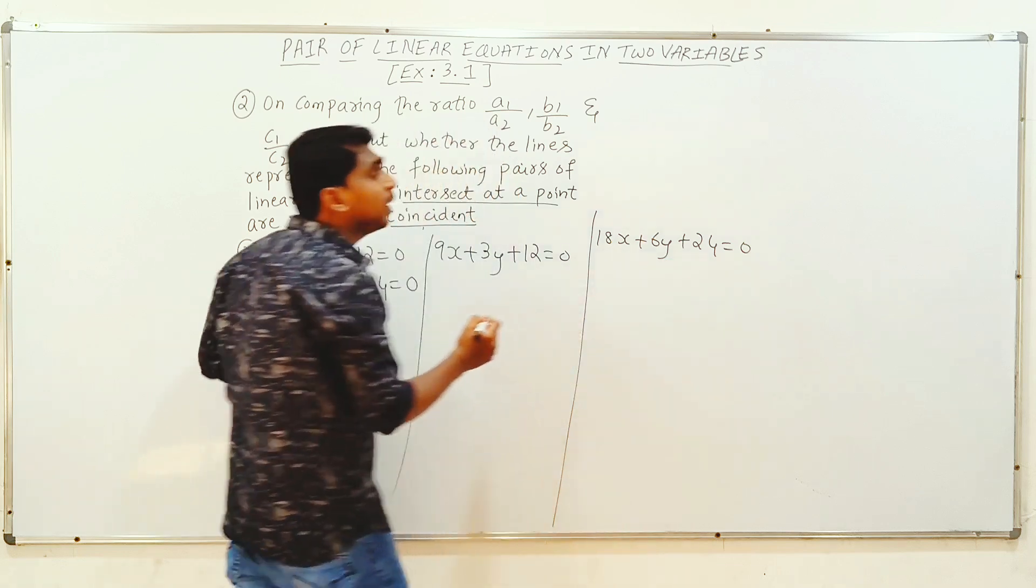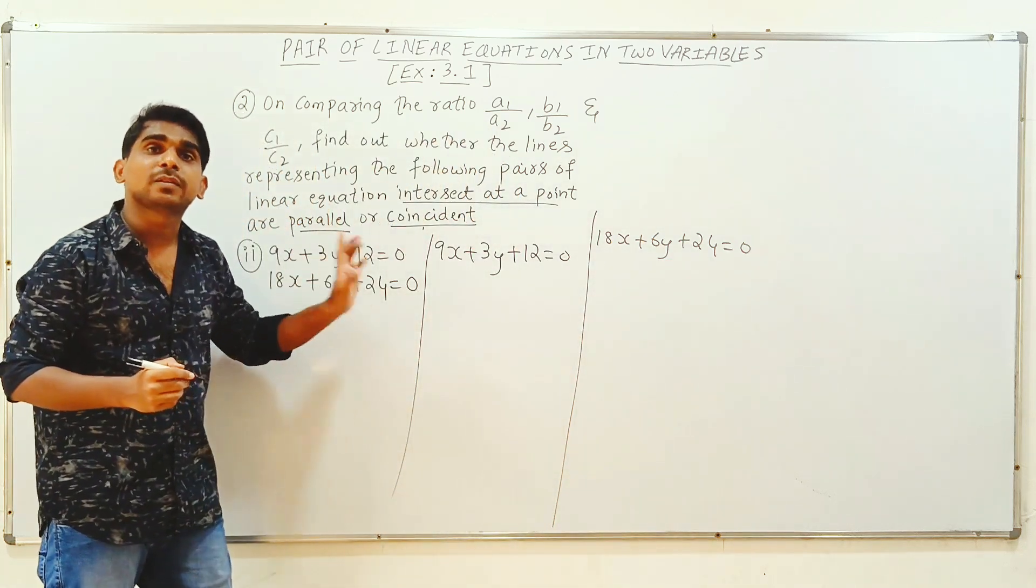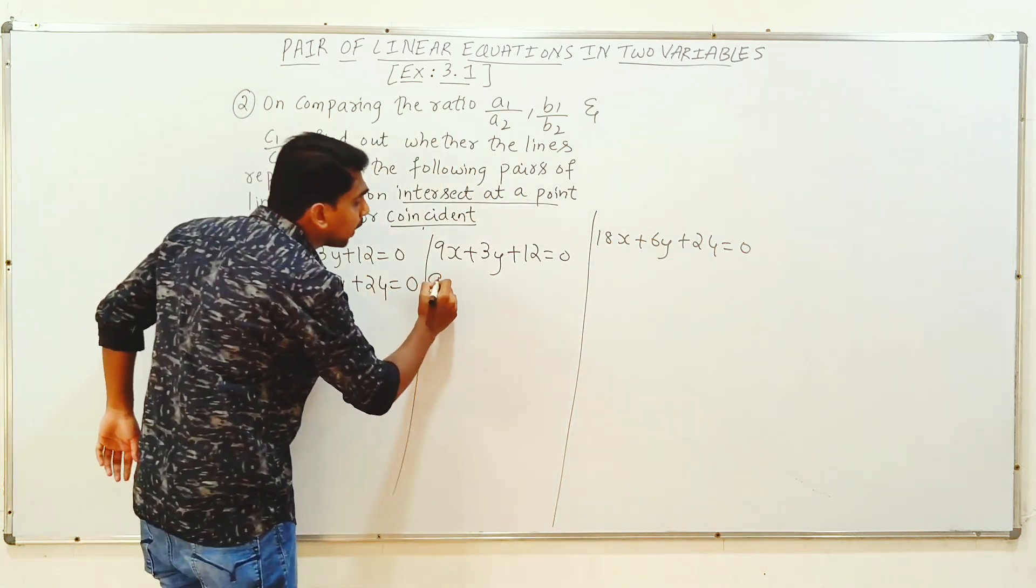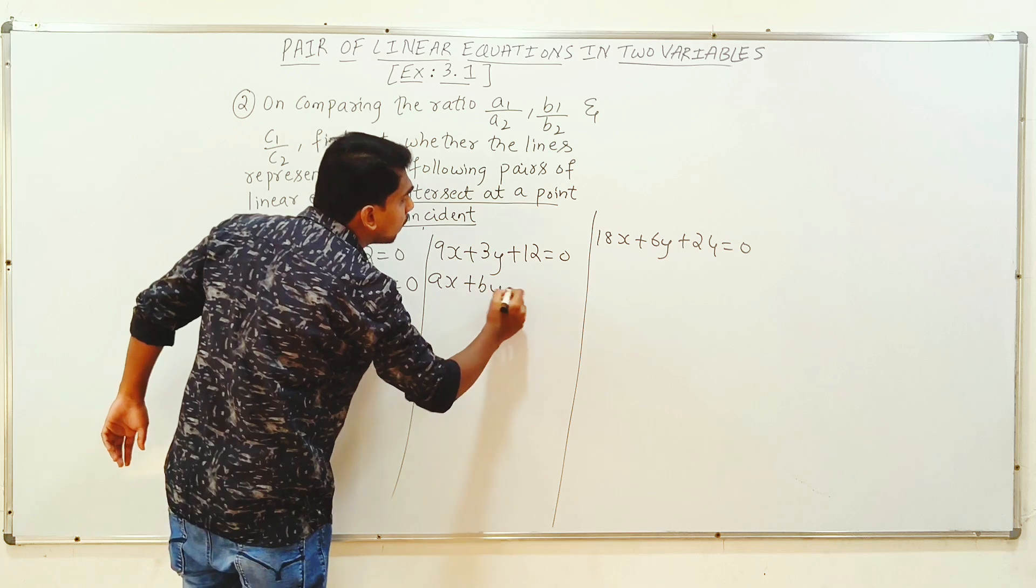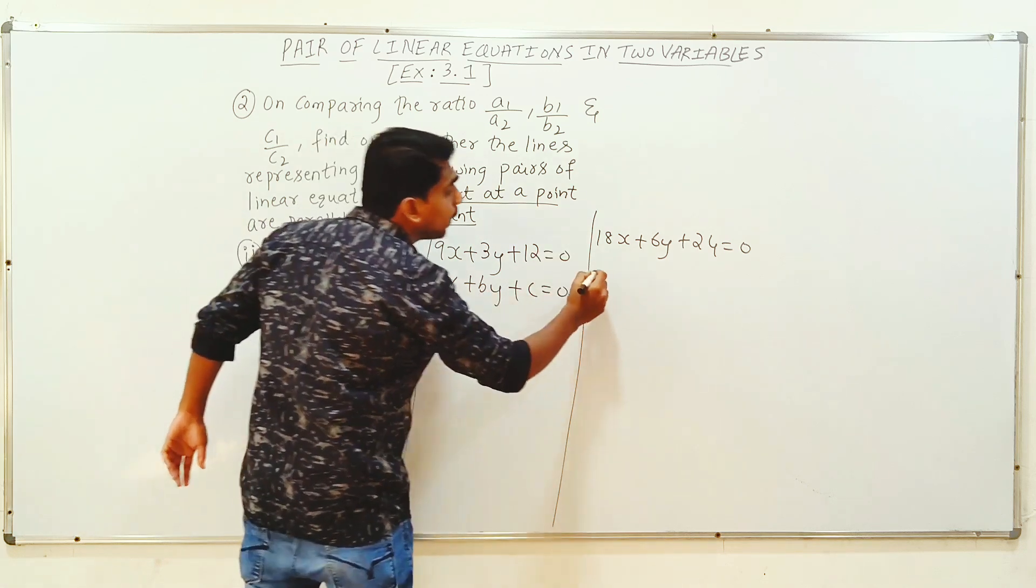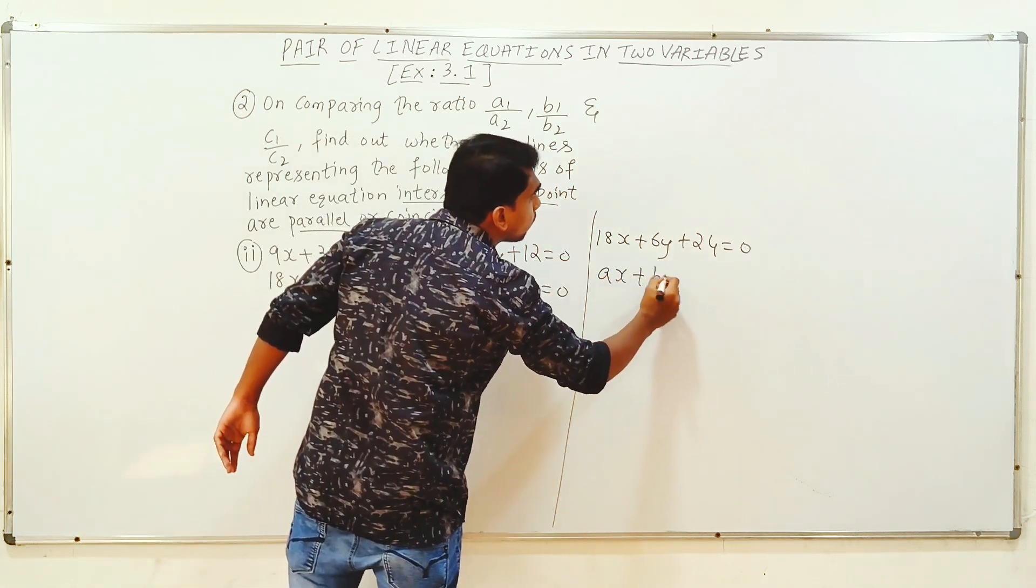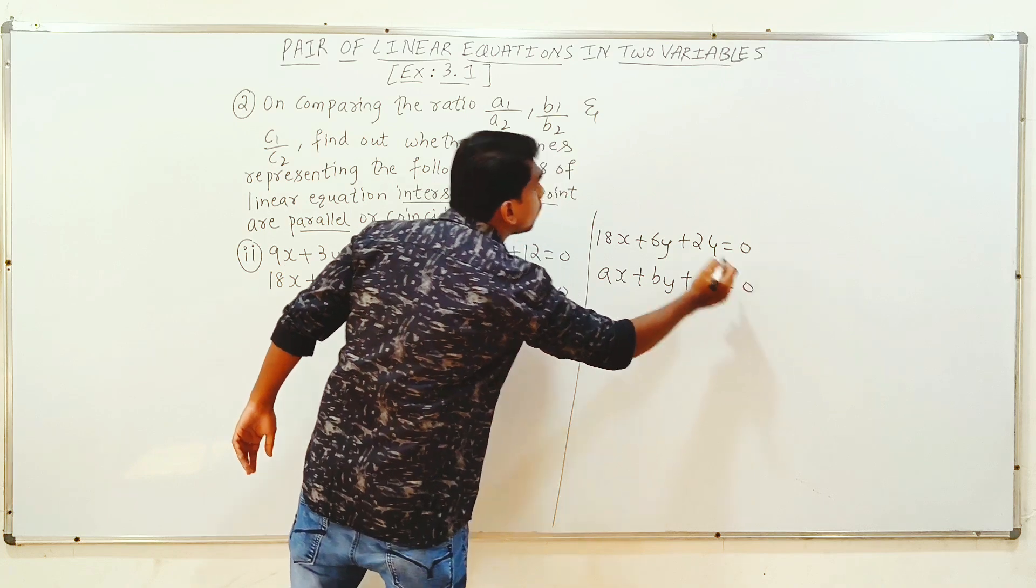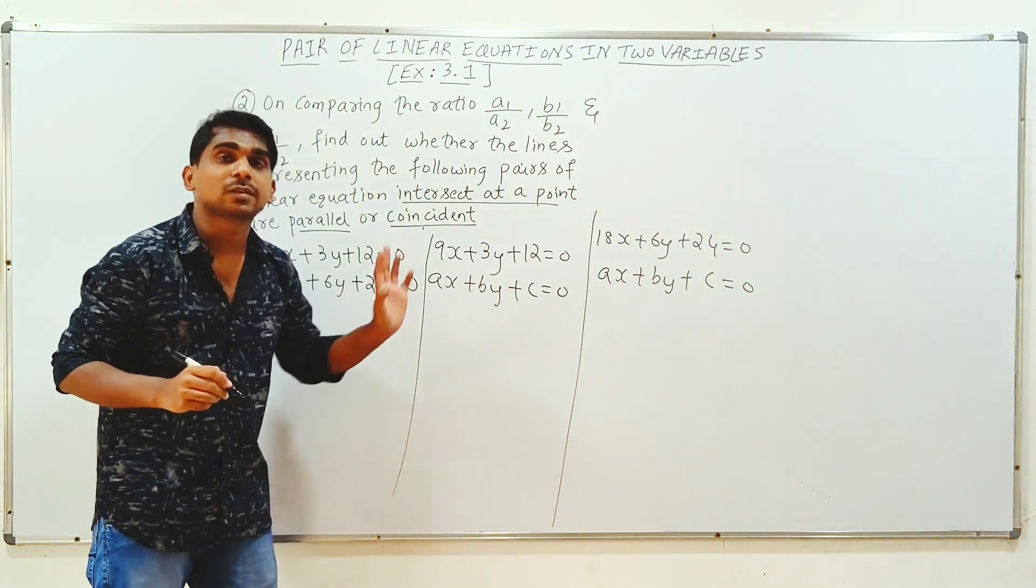This equation is the same. We have two variables equation standard form: Ax plus By plus C equal to 0. Here also, what is the equation? Ax plus By plus C equal to 0. This equation is the same.